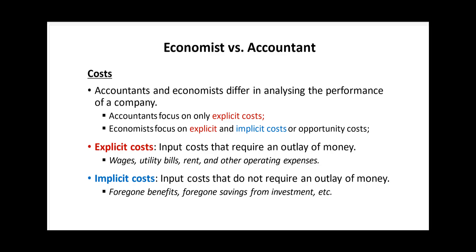Economists and accountants analyze company performance differently. For example, if you'd like to analyze profitability of a company as an accountant, you will take into account explicit costs only. But as an economist, you will take into account explicit and implicit costs. These two types of costs make up the opportunity cost of running a business.